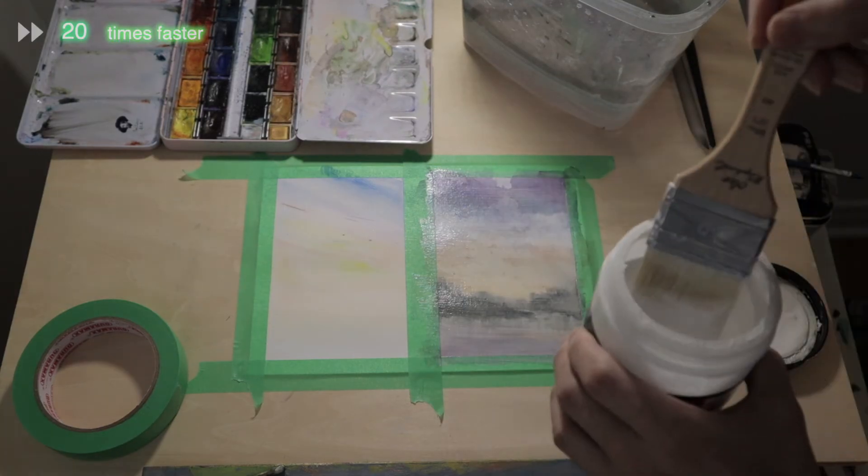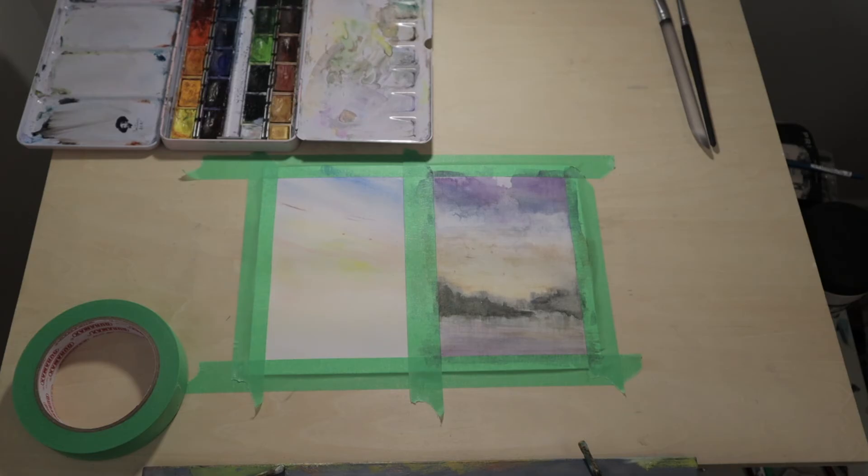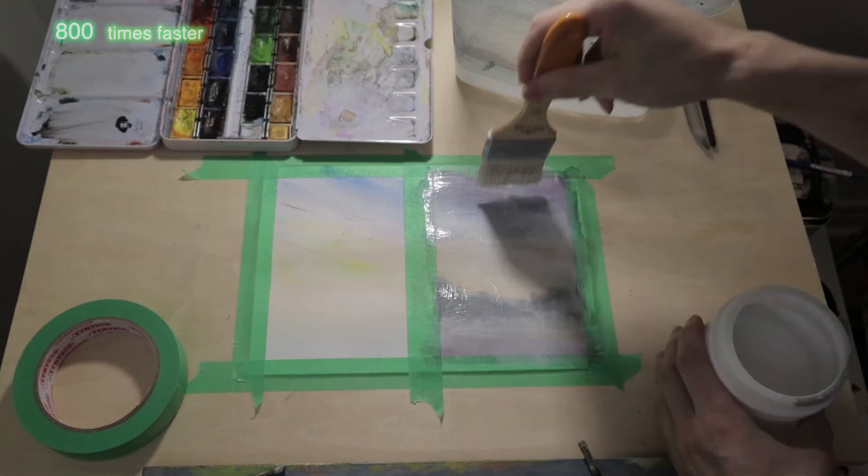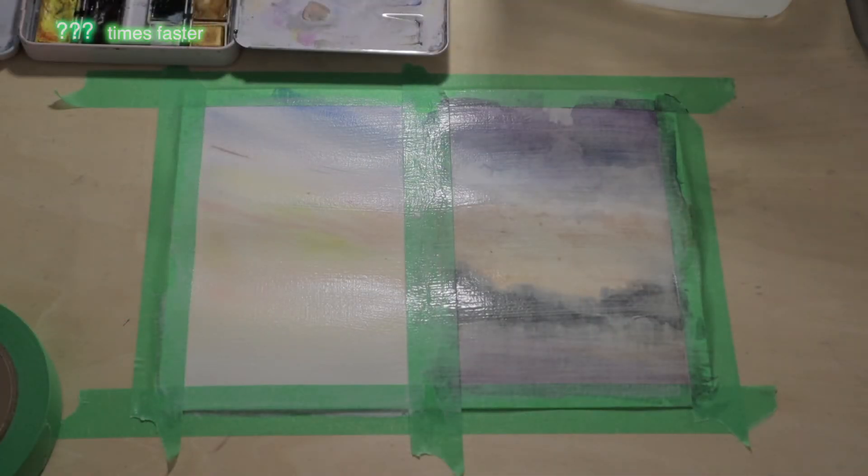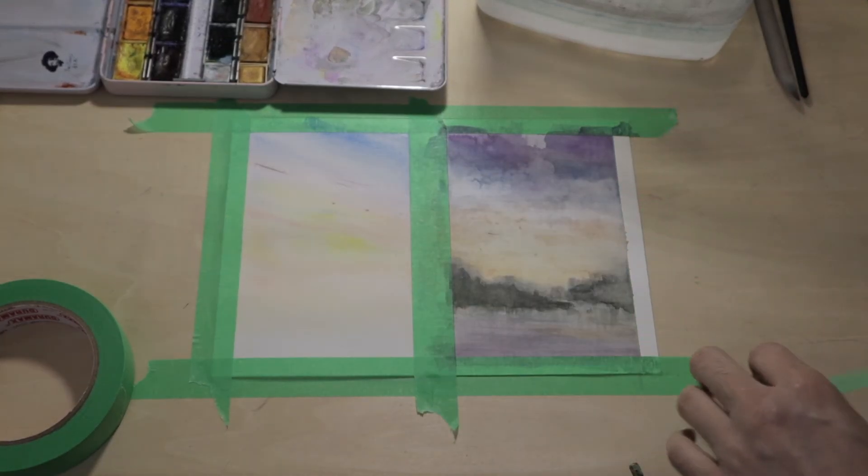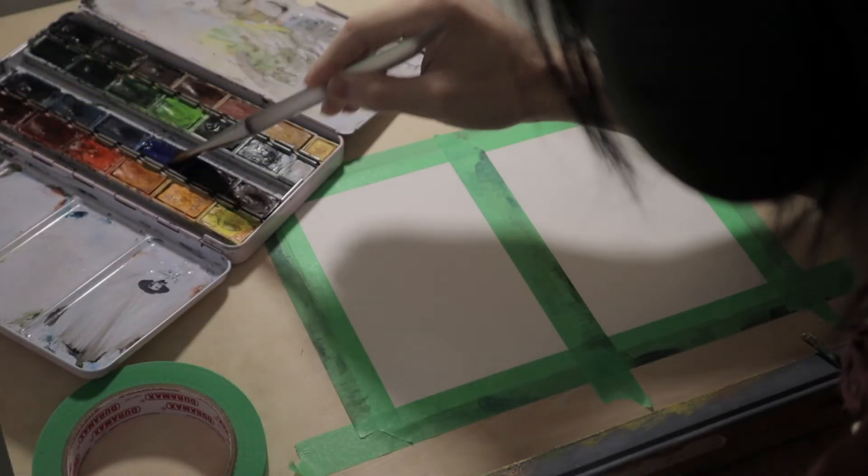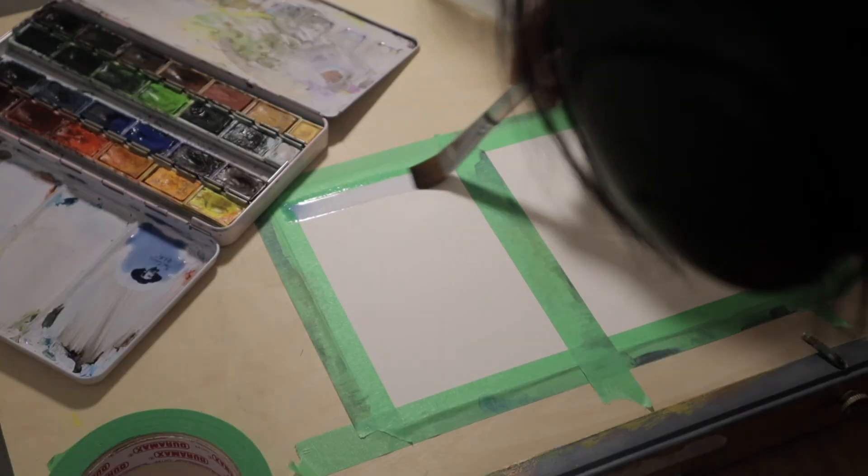The gesso dulled down the color for sure, but it's reasonably transparent. I'm trying some sky-cloud designs.